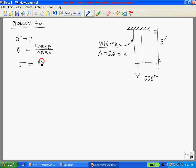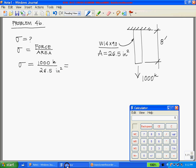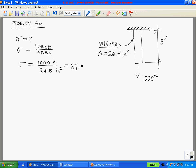Our force is 1000 kips, our area is 26.5 inches squared. Put that through our calculator: 1000 kips divided by 26.5 equals 37.736 kips per square inch. Always double check your units, and that's the correct answer.